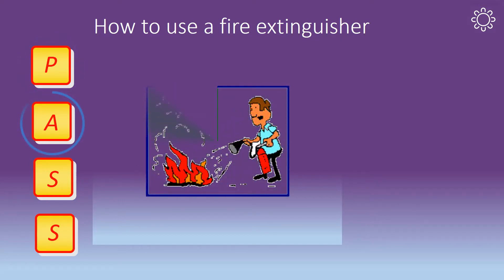Aim the nozzle. Before approaching the fire, it is a good idea to test the extinguisher first. Once this has been done, aim the nozzle at the base of the fire. By doing so, you will hit the fuel source. If you aim at the flames, the powder will fly right through the fire and have little or no effect at all.